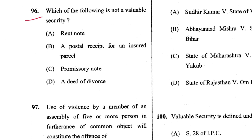Question 96: Which of the following is not a valuable security? A rent note is a valuable security. A postal receipt for an insured parcel — not a valuable security. A promissory note is. A deed of divorce — no, D is the answer.